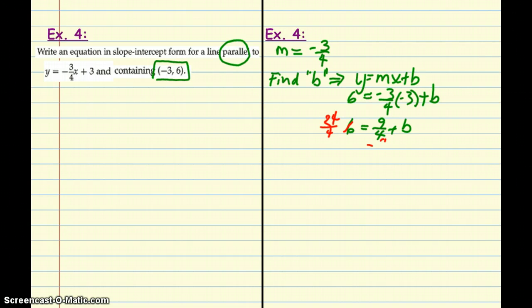So, now what I can do is subtract 9 fourths from both sides. 24 minus 9 is 15. It's equal to b.